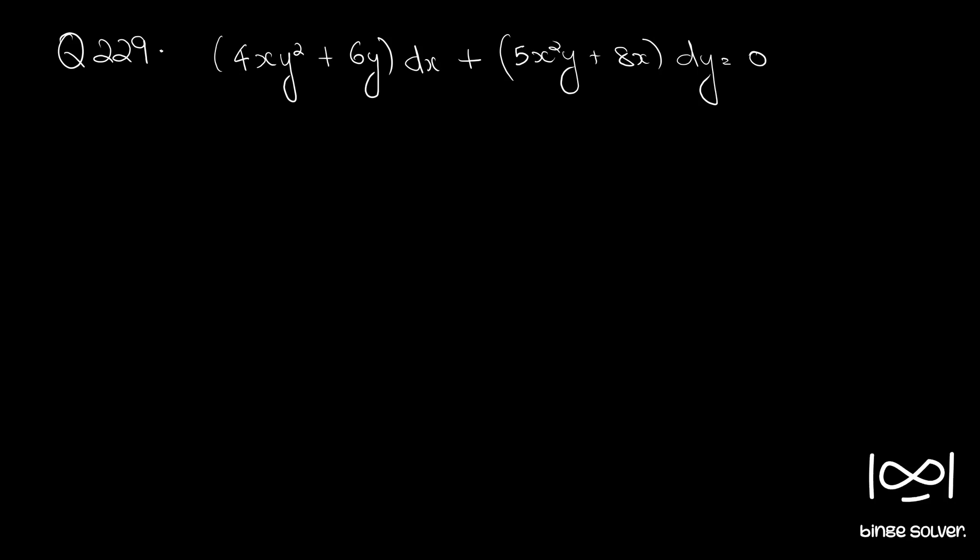Question 229: 4xy² + 6y dx + 5x²y + 8x dy = 0.